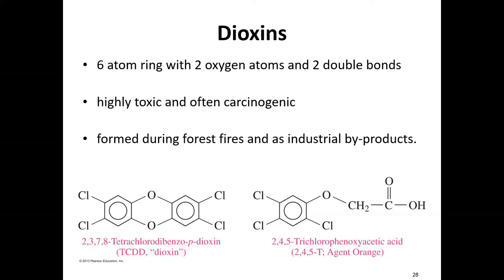One type of dioxin, very similar in structure, has been used as Agent Orange. Another form — simply called dioxin — is usually formed as an industrial byproduct and also forms during forest fires. If you end up working in areas with large forest fires — like in the Midwest or California — you might see dioxin poisoning with forest firefighters or smoke jumpers. Those exposed to large amounts of forest fire smoke routinely have their dioxin levels checked, because it is carcinogenic and toxic.